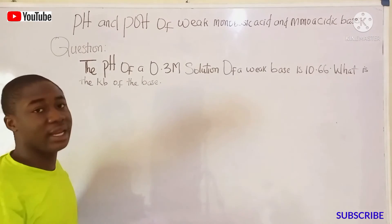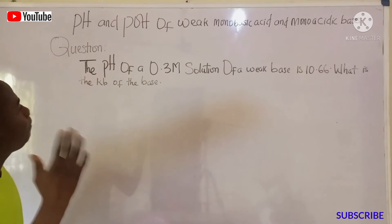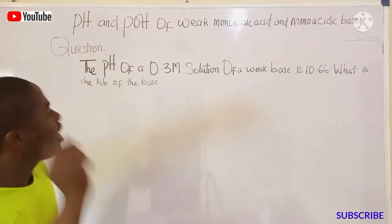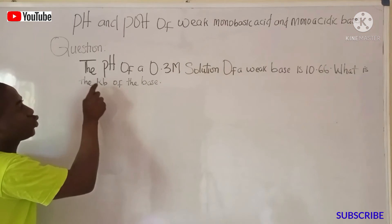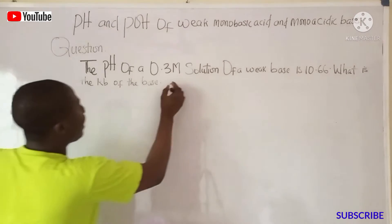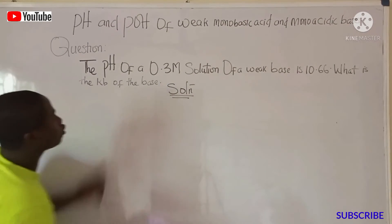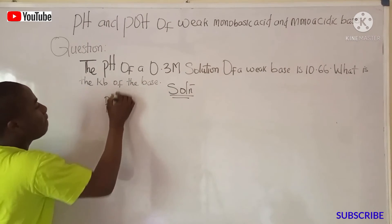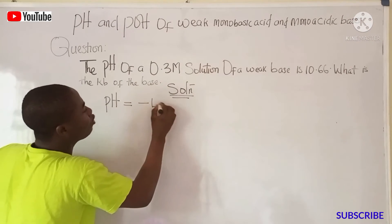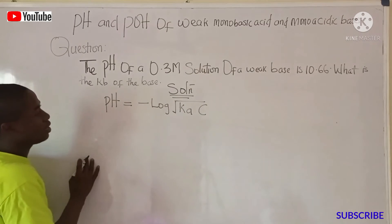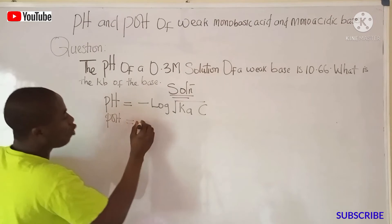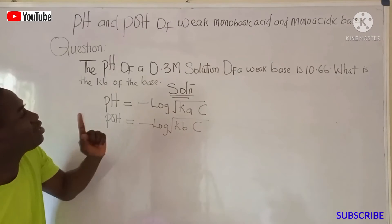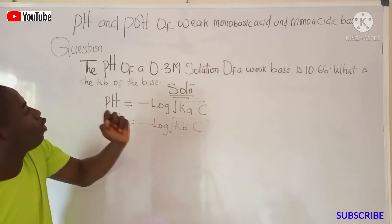Now let's move to the second question. The question says: the pH of a 0.3 molar solution of a weak base is 10.66. What is the Kb — the base dissociation constant — of the base? The question is asking us to find Kb, but they gave us pH. So we need to first convert pH to pOH, since pOH is related to Kb.